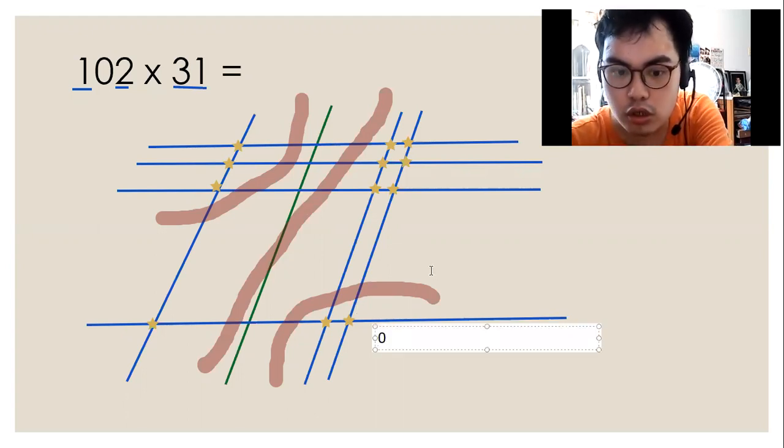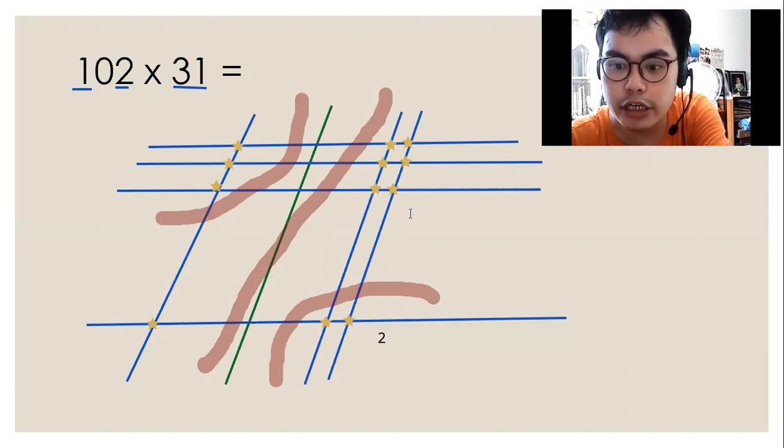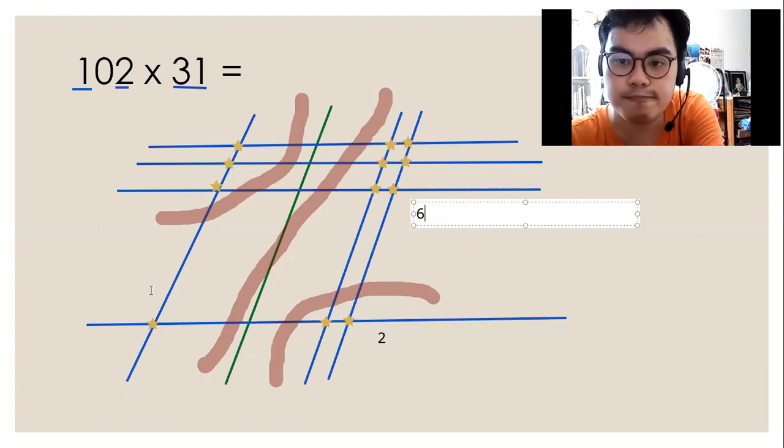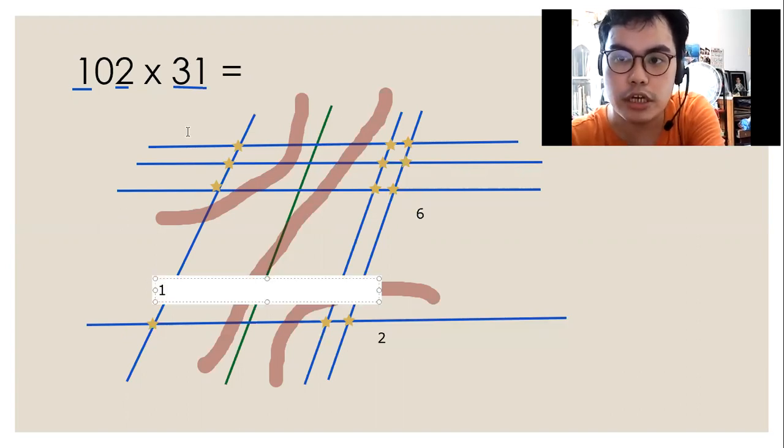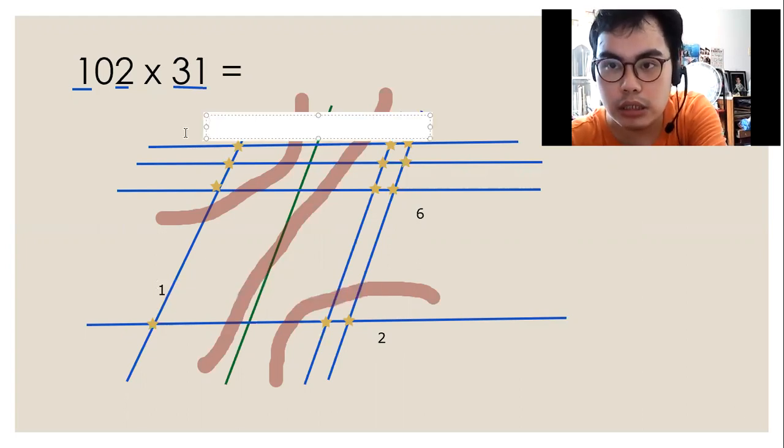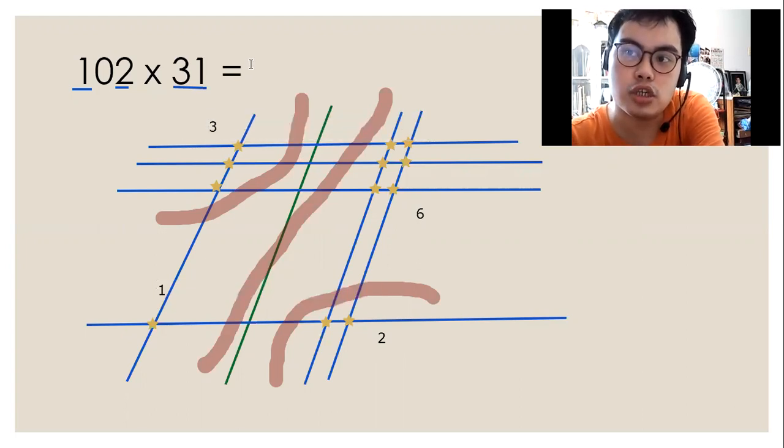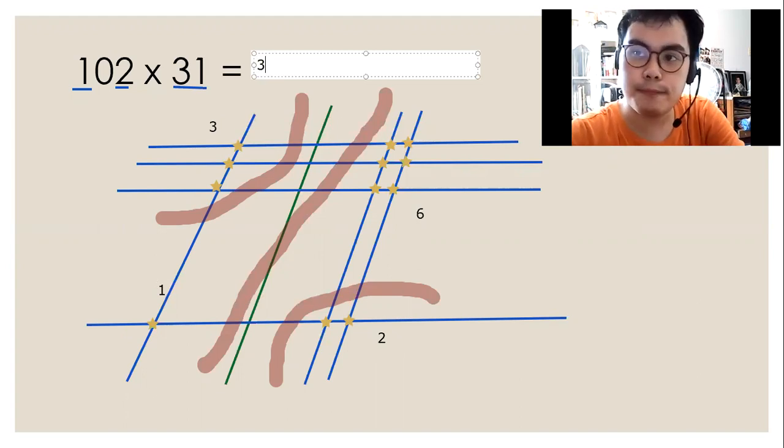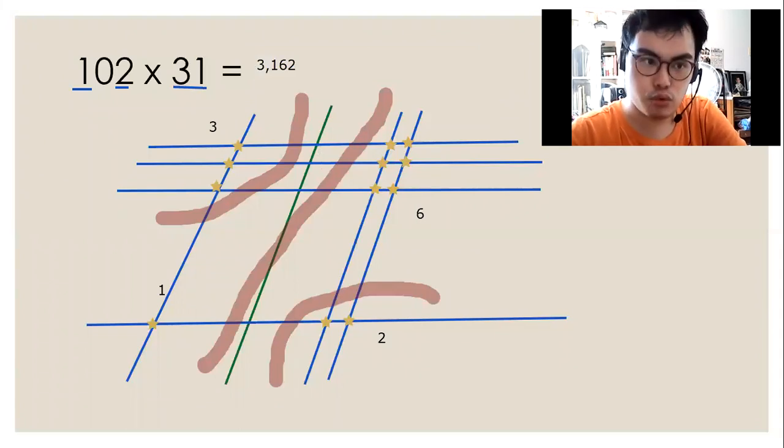So now, in this group, we have two stars. Here, six stars. This one has one star. And here, three stars. Therefore, our answer is 3,162.